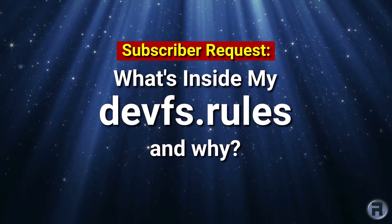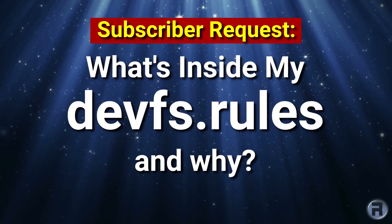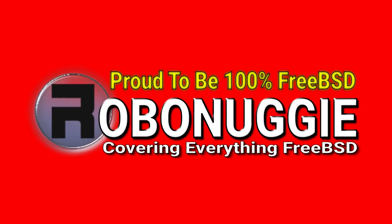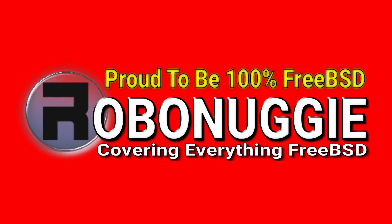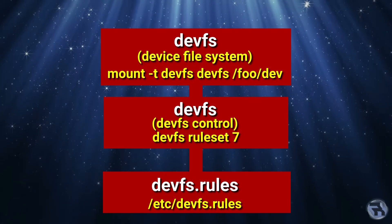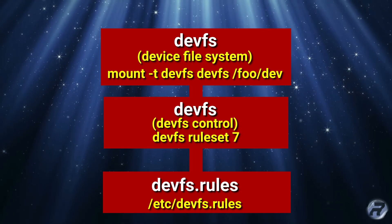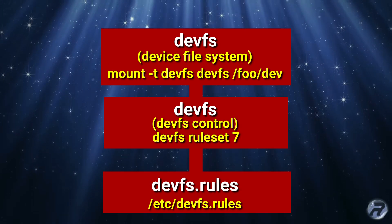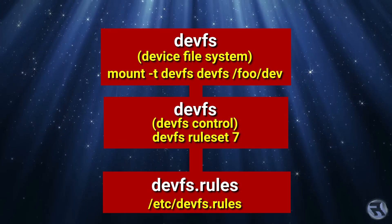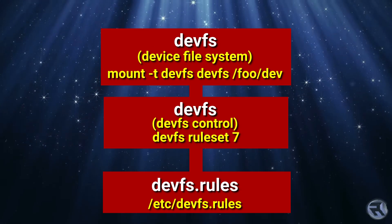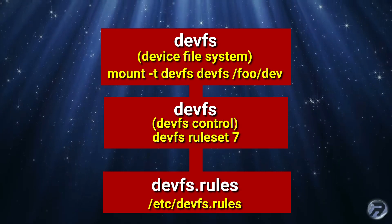Before we get into what's in my devfs rules file, it's best to understand what it is and what it does. Here is a very simplistic explanation, courtesy of the FreeBSD man page. The top section on the graph you can see is the device file system, and it provides access to the kernel's device namespace in the global file system namespace.